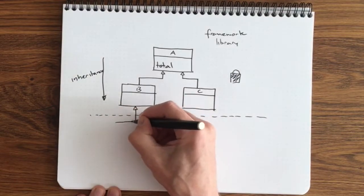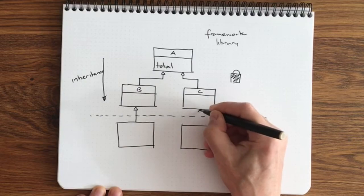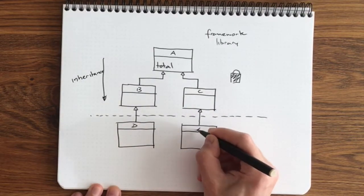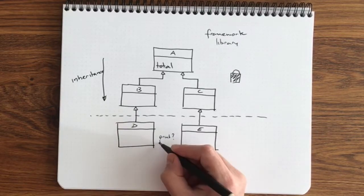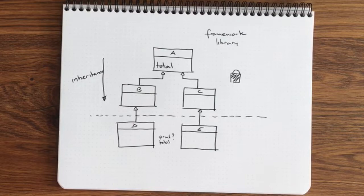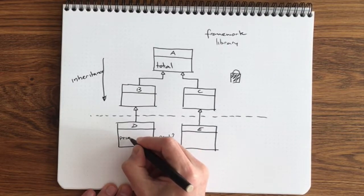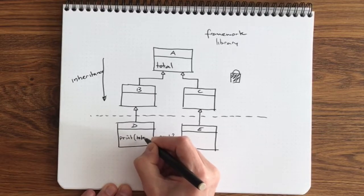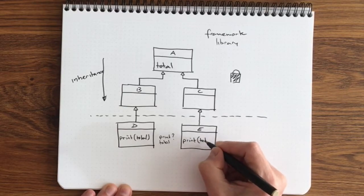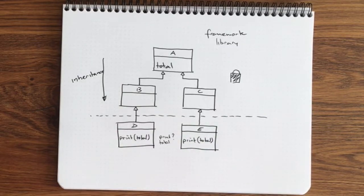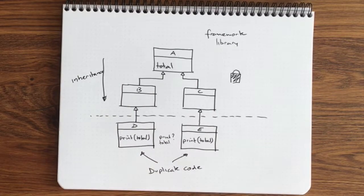Now if we want to change the functionality from B and C, we are going to inherit from B and C into class D and E. Now how would we print the value of total in class D and E? We need to implement printTotal in class D and we need to implement printTotal in class E. And this of course leads to duplicate code. This is where mixins can help us.